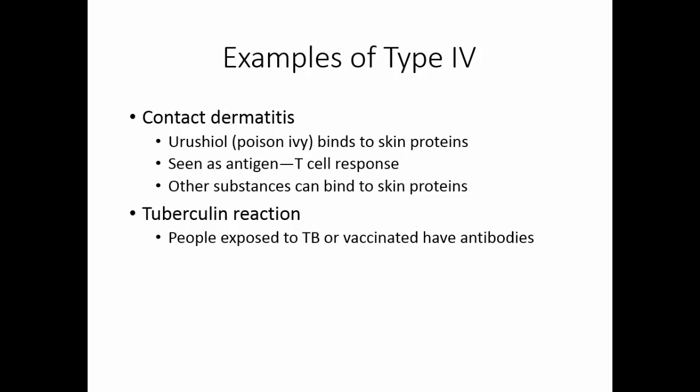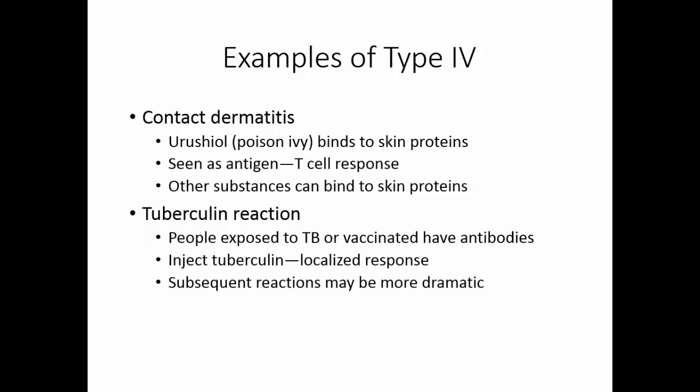The tuberculin reaction occurs in people that have been exposed to TB or are vaccinated. In either case, these people have antibodies. When they are injected with tuberculin, they get a localized response. Tuberculin used to be killed tuberculosis organisms, but now they use PPD — purified protein derivative — only the protein portions to stimulate the response. The localized response takes about 72 hours to develop. Once you have a positive skin test, subsequent reactions may be more dramatic. As you develop memory cells, the response will be quicker and more vigorous.